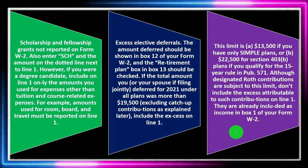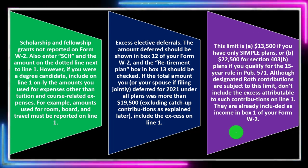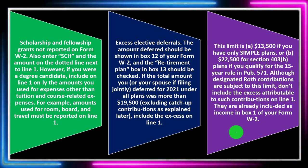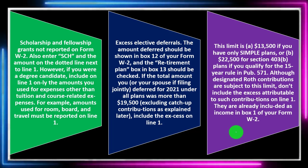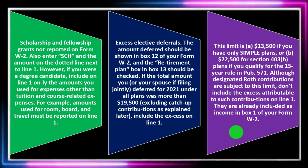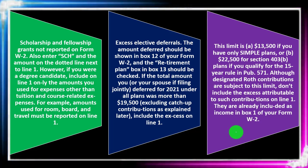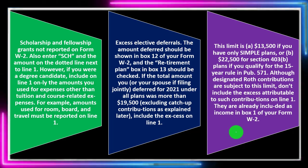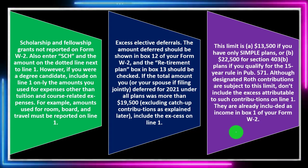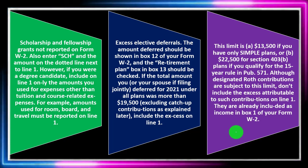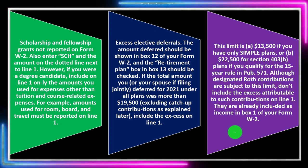Roth IRA contributions are subject to these limits, but don't include excess attributable to Roth contributions on line one. Roth IRAs are the type where you don't get the upfront tax benefit — you pay taxes upfront, then get the benefit later from earnings and can withdraw money without paying taxes at that point. It's the reverse of a normal retirement plan like a traditional IRA, 401(k), 403(b), or SIMPLE plan. These are already included as income in Box 1 of your W-2, so it should be handled for you.